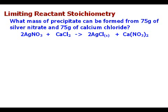Here's our problem for today. What mass of precipitate can be formed from 75 grams of silver nitrate and 75 grams of calcium chloride?